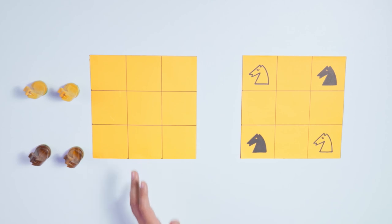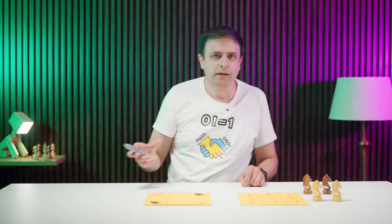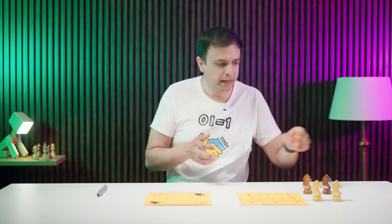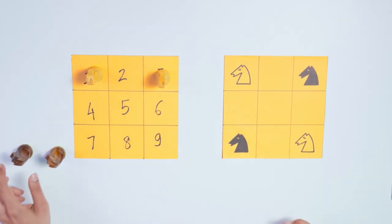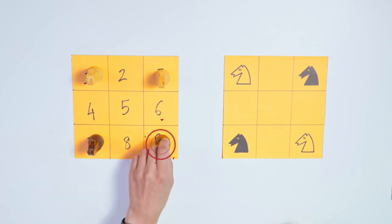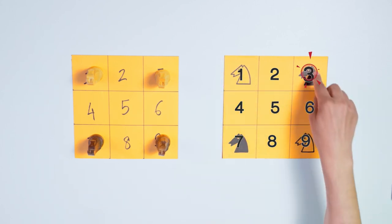First, I'll number these squares from 1 to 9. So in the initial state, the white knights are on 1 and 3, and the black knights are on 7 and 9. And in the final state, the white knights are on 1 and 9, and the black ones are at 3 and 7.